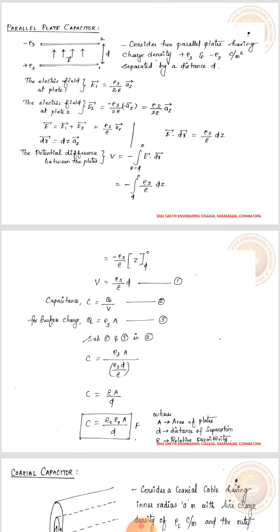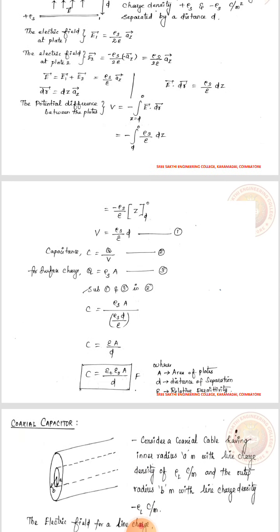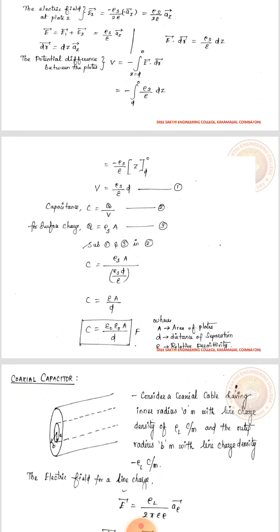The surface charge Q is equal to rho_s into A. Applying the values of Q and V in the capacitance formula C equals Q by V, where Q is rho_s times A and V is rho_s times d by epsilon, and cancelling rho_s, C is equal to epsilon A by d, where epsilon can be written as epsilon_0 times epsilon_r times A by d, and epsilon is the permittivity.